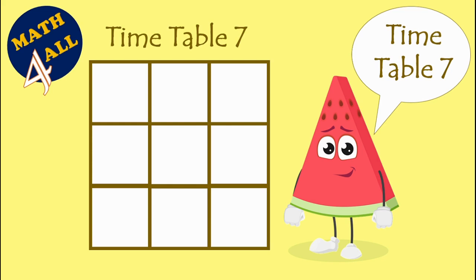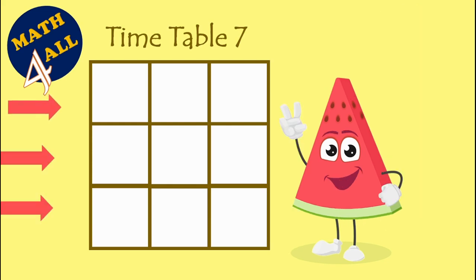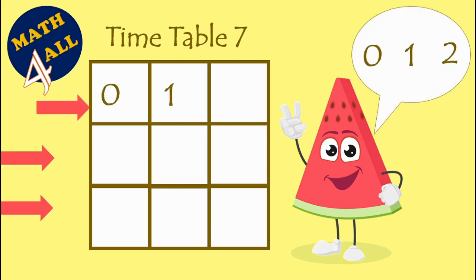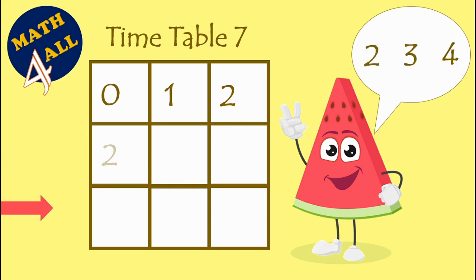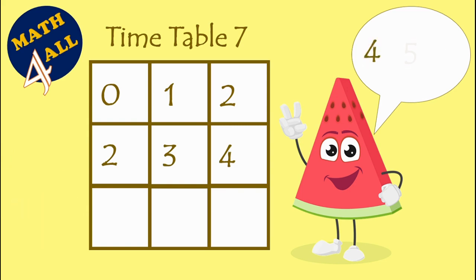Let's start. We are going to talk about timetable 7. From the left side, I need you to write this pattern: starting from 0 in the first row — 0, 1, 2. Then starting from 2 in the next row — 2, 3, 4. After that, starting from 4 in the last row — 4, 5, 6.